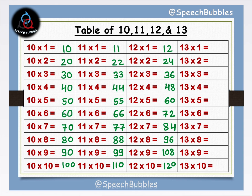And at the last we will learn the table of 13. 13 1s are 13, 13 2s are 26, 13 3s are 39, 13 4s are 52, 13 5s are 65.